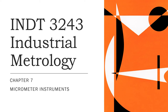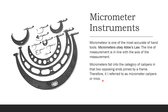This is Chapter 7 on micrometer instruments. Micrometers are one of the most accurate hand tools. They obey Abbe's law — the line of measurement is in line with the axis of measurement. Micrometers fall into the category of calipers, with two opposing ends joined by a frame, and are referred to as micrometer calipers or mics.